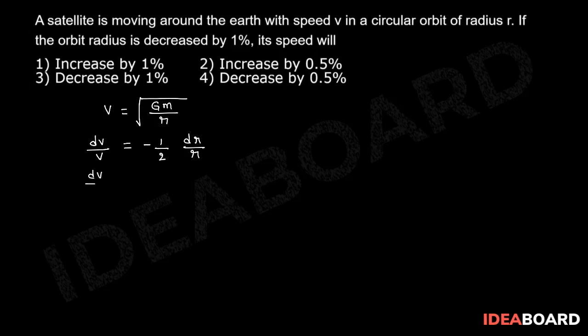So dv by v into 100 equals minus 1 by 2 dr by r into 100.